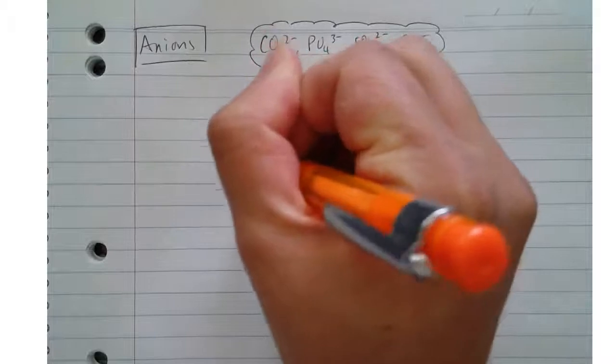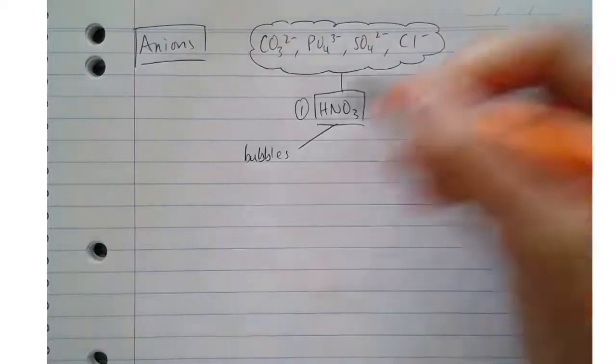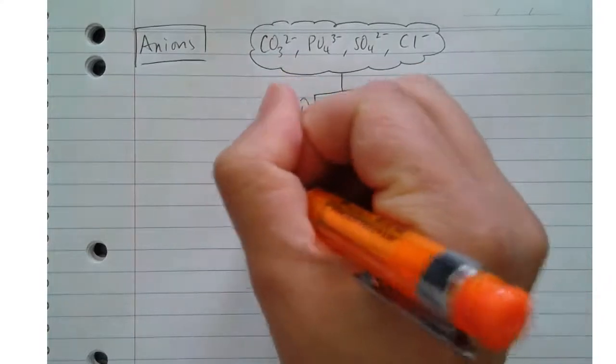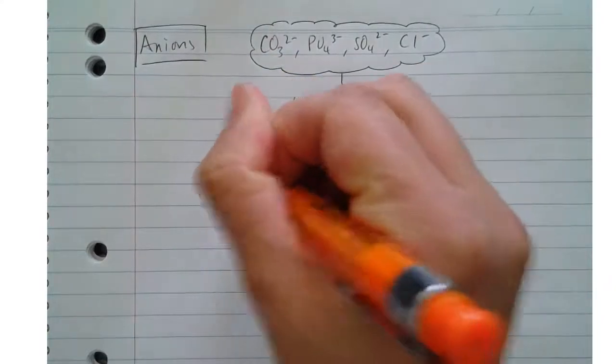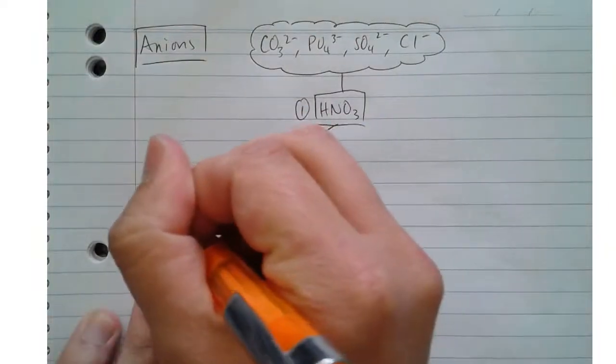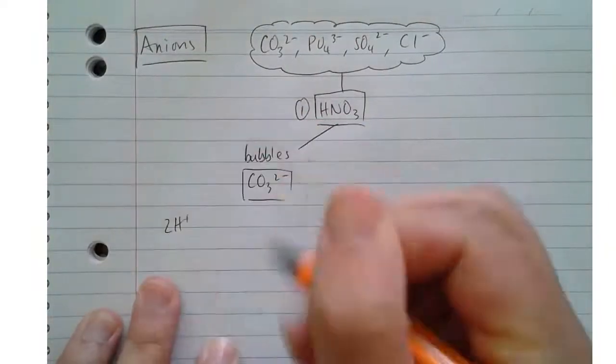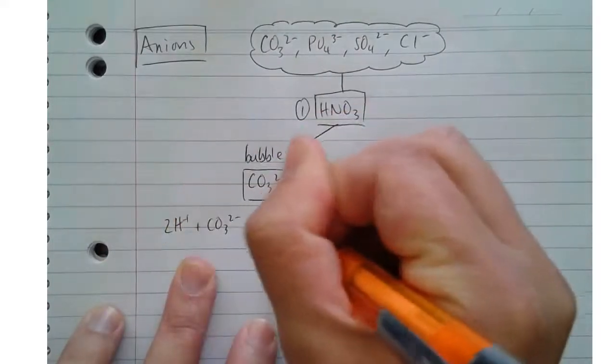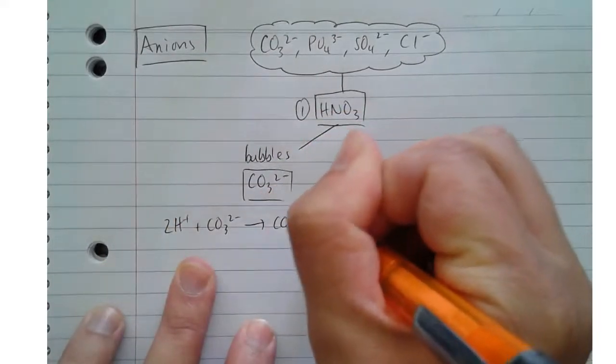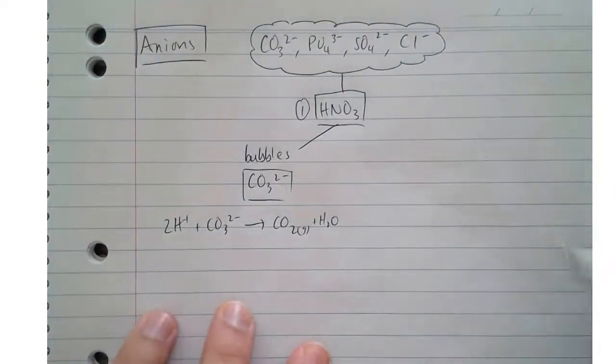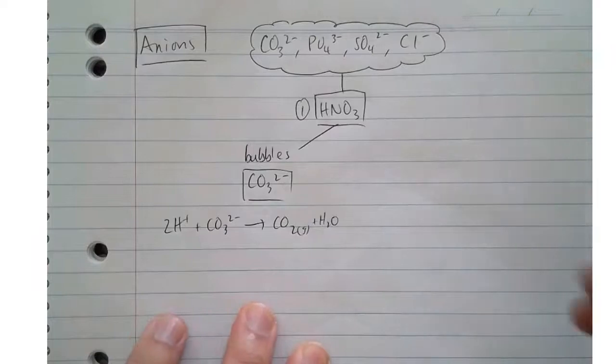So what we would see when we add it to a sample that contains one of these ions, we're going to get bubbles, and we get bubbles for the carbonate ion, because we're getting the hydrogen ion in the acid reacting with the carbonate ion to form carbon dioxide gas and water. So that's quite characteristic. The other three ions won't do that.